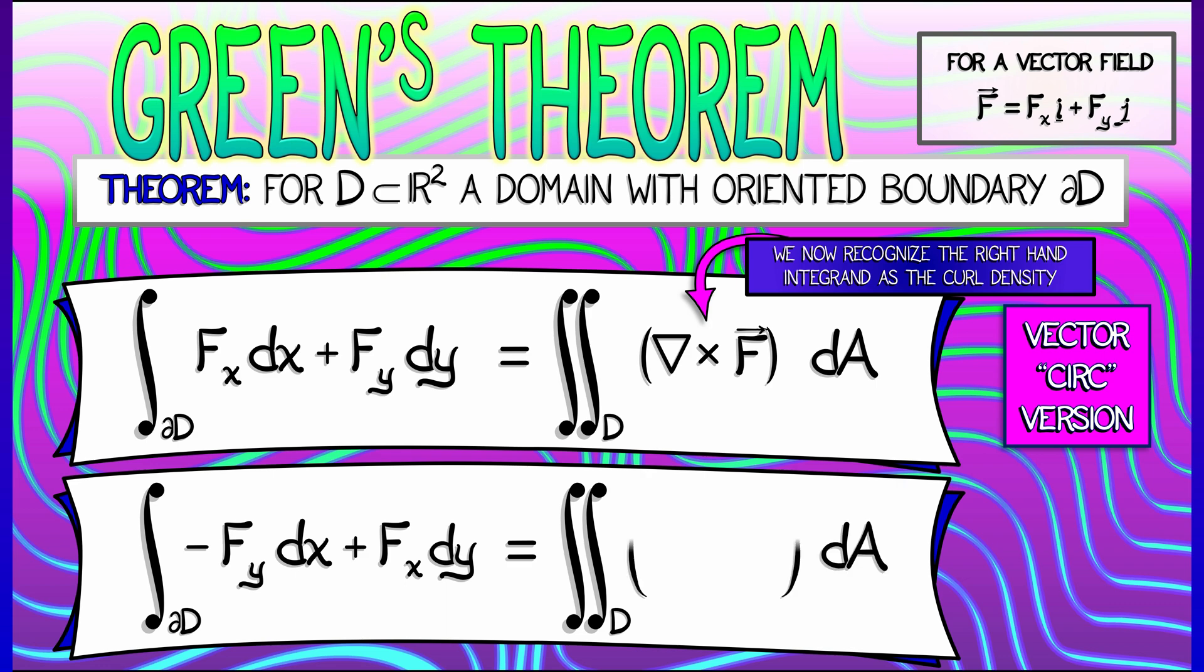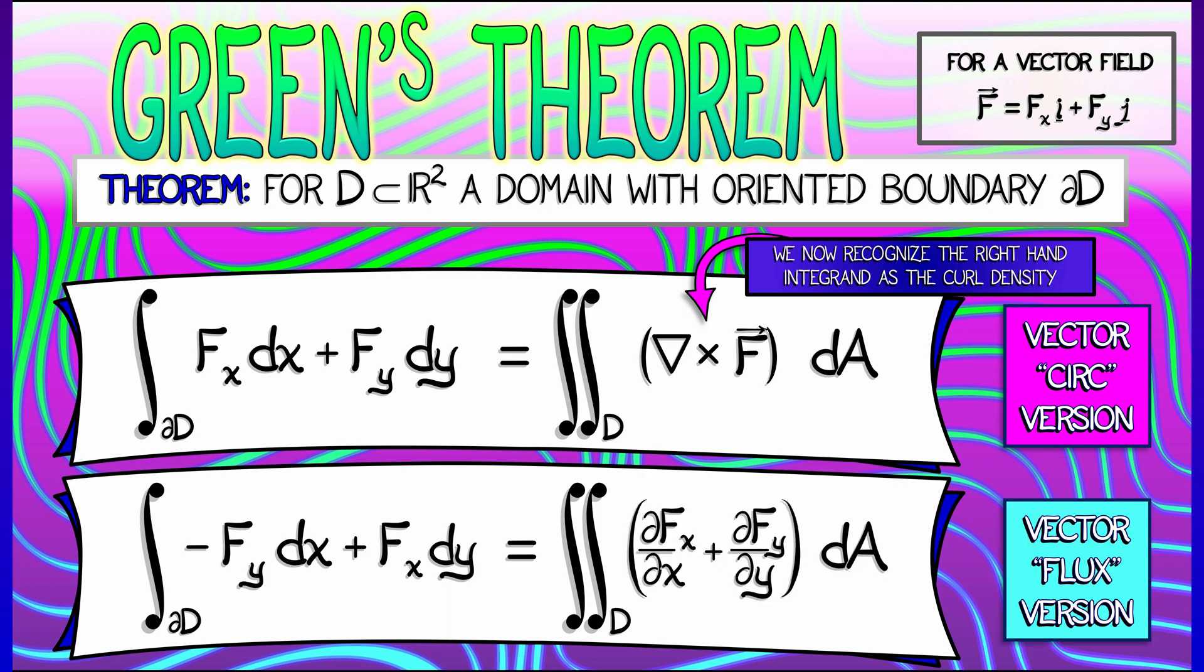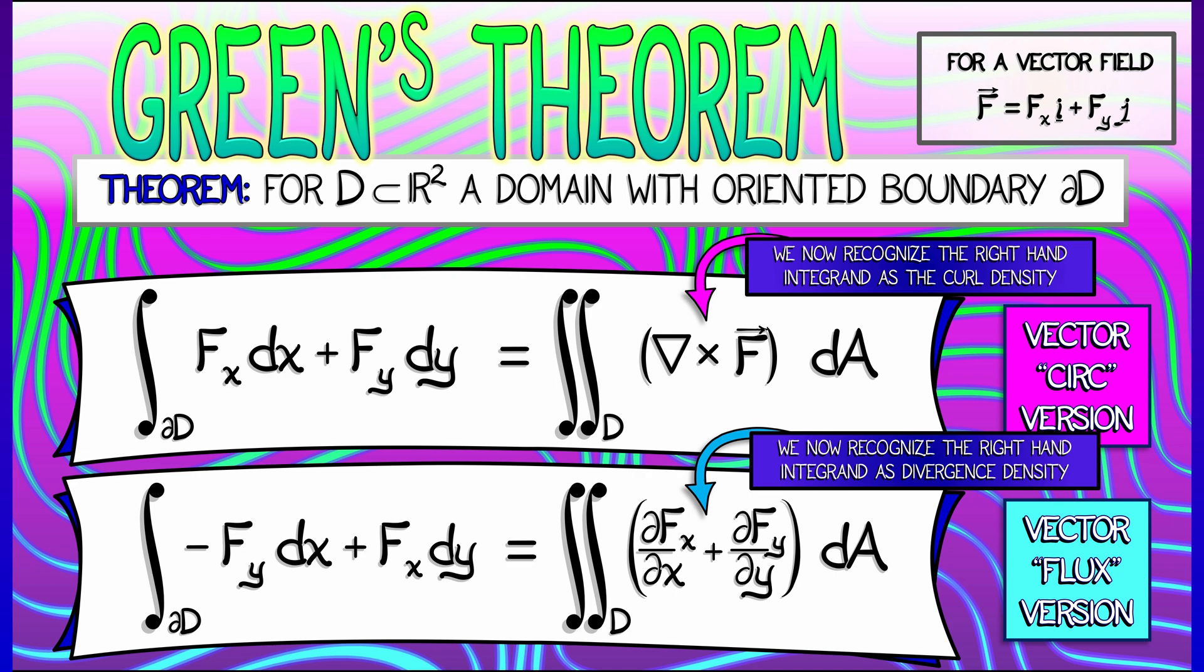this is really the same thing as the double integral over the interior of partial fx partial x plus partial fy partial y. And that right-hand integrand we now recognize as the divergence density. So we have these two sort of dual interpretations of Green's theorem in terms of curl and divergence.